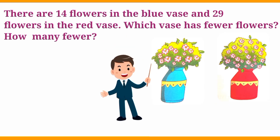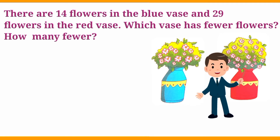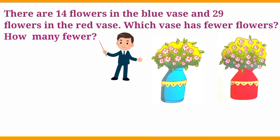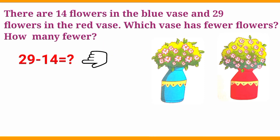There are 14 flowers in the blue vase and 29 flowers in the red vase. So the question is: 29 minus 14 is equal to what?